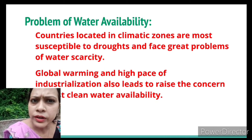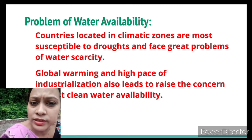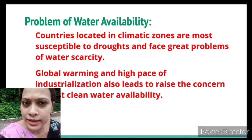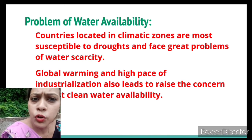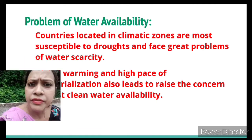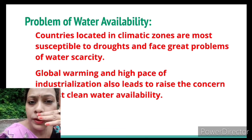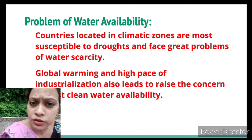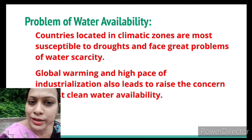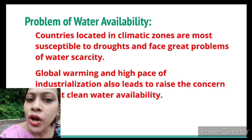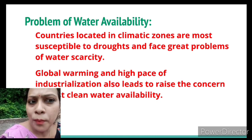Countries located in drier climatic zones are most susceptible to drought and face great problems of water scarcity, as less rainfall means less water available. Global warming and the high pace of industrialization have also raised concerns about clean water availability. Industries discharge industrial waste onto land, which seeps into groundwater, degrading it. Over-utilization of pesticides and dumping of industrial waste directly into rivers and water bodies pollutes fresh water sources, further worsening the situation.